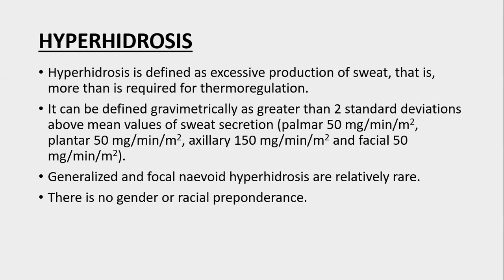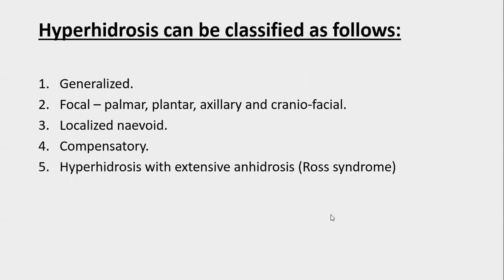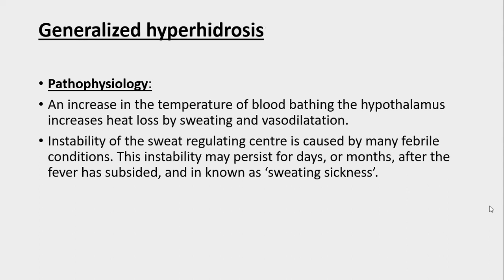Generalized and focal nevoid hyperhidrosis are rare presentations and there is no gender or racial preponderance. Hyperhidrosis can be classified as: generalized hyperhidrosis; focal hyperhidrosis including palmar, plantar, axillary, and craniofacial; localized nevoid hyperhidrosis; compensatory hyperhidrosis; and hyperhidrosis with extensive anhidrosis, known as Ross syndrome.